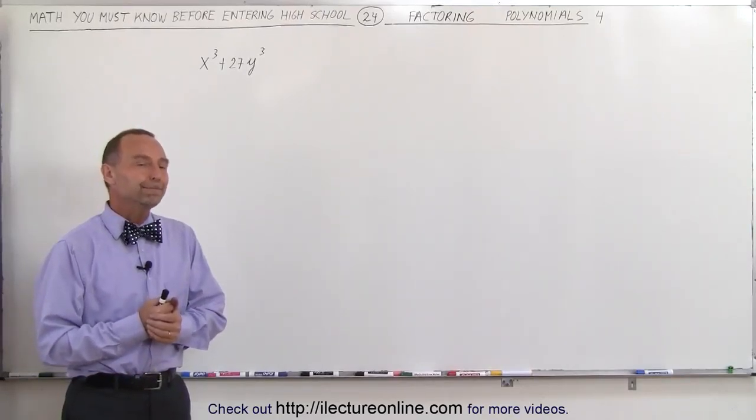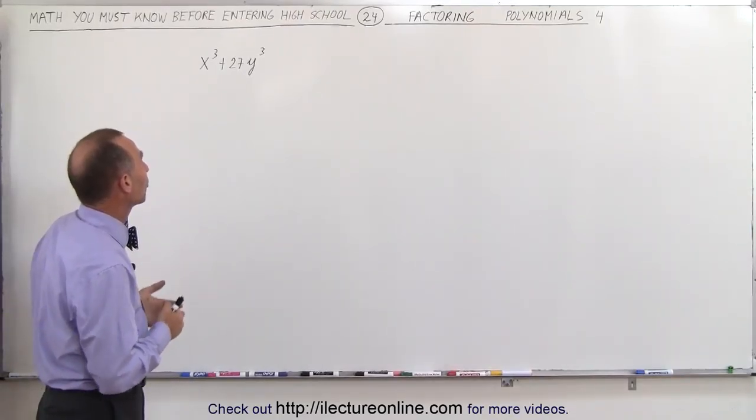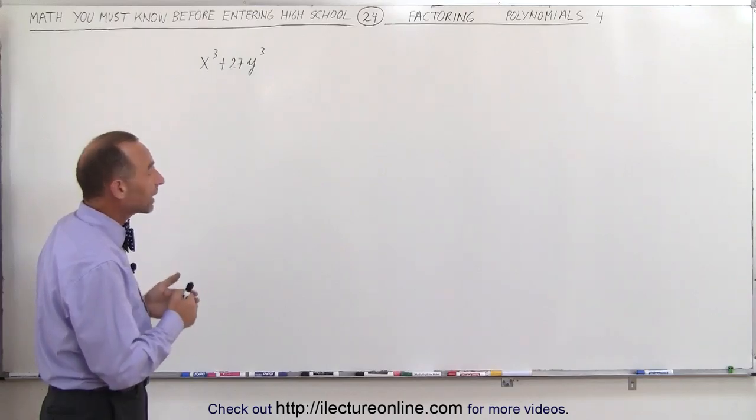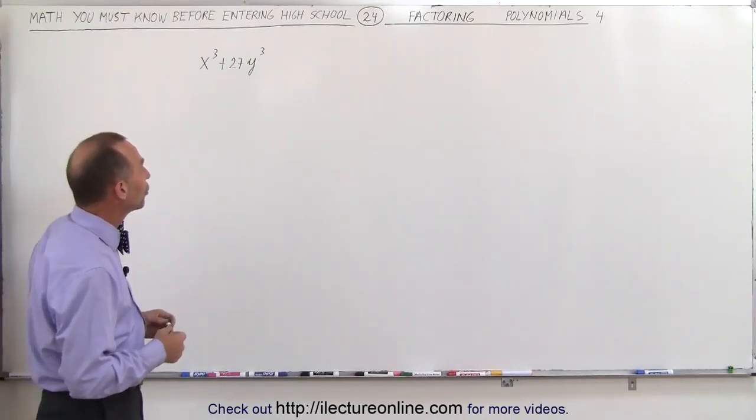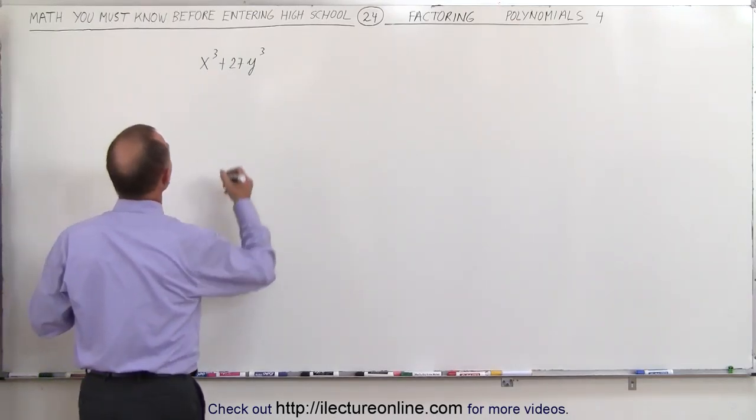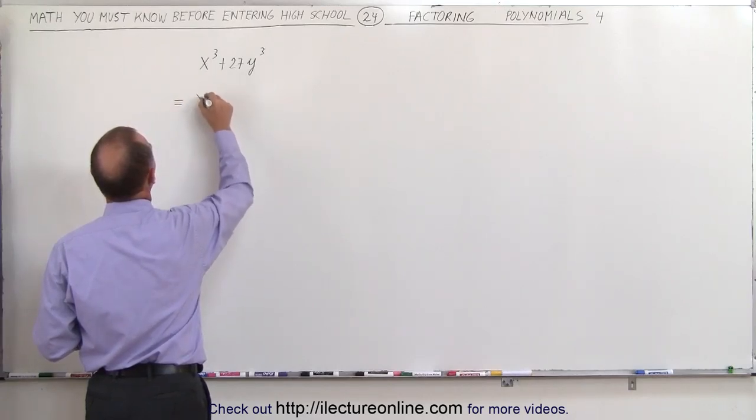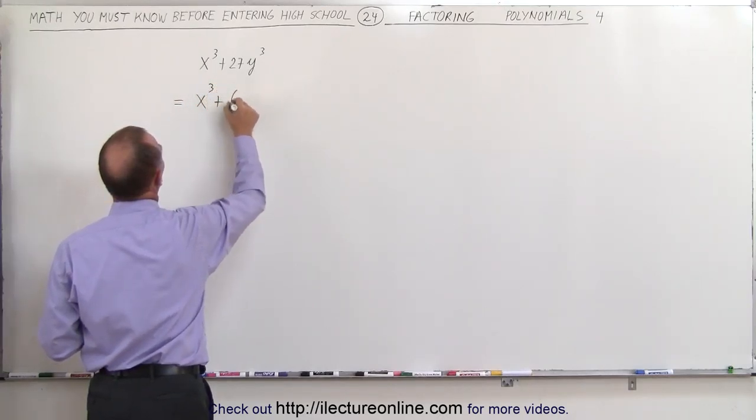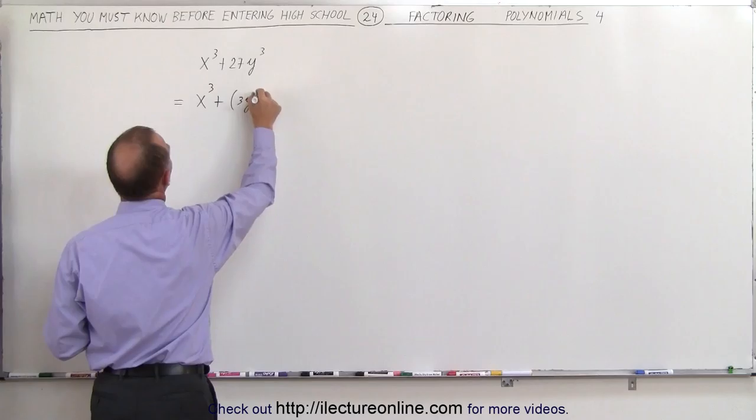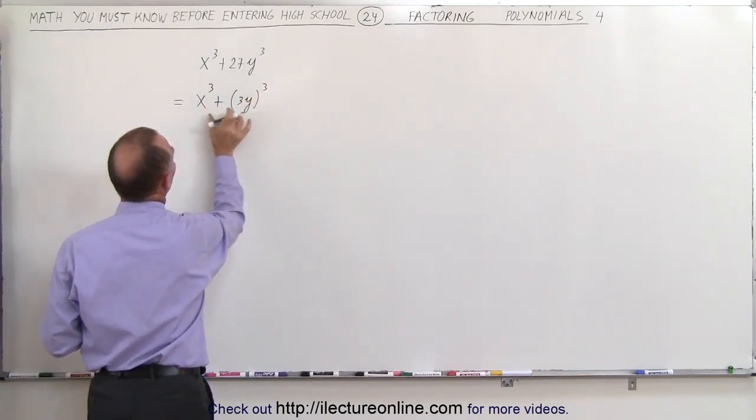Welcome to Electron Line. Here we have a very special situation. You need to recognize this as the sum of cubes. In other words, we can rewrite this as x cubed plus the quantity 3y cubed. So it's the sum of cubes.